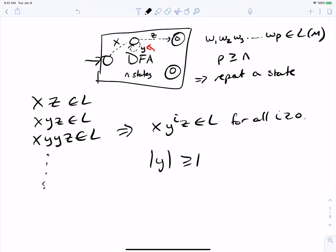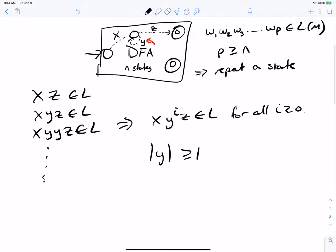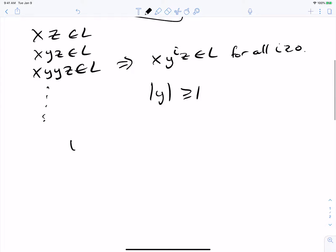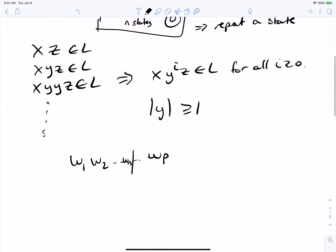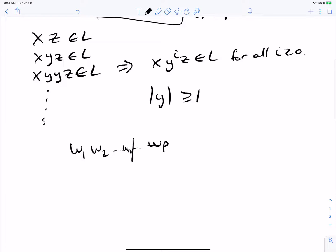Okay, so then what else can we assume? Well, if we look at that string that we had, w1 up to wp, and let's just say that we take the first n characters out of it. So remember, we have n states. And let's just say we take the first n characters, maybe not the entire string.